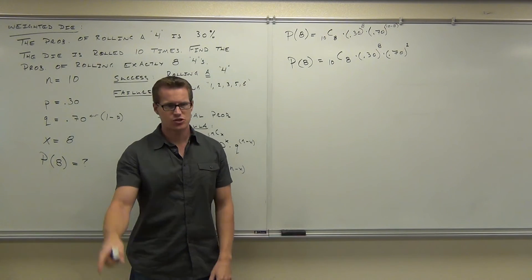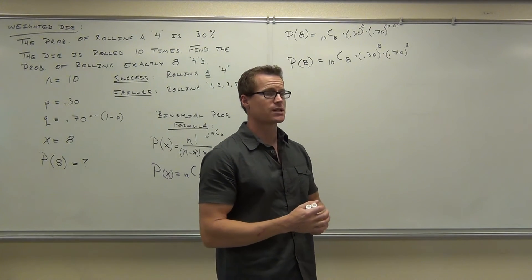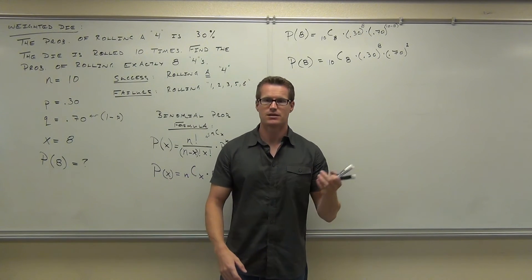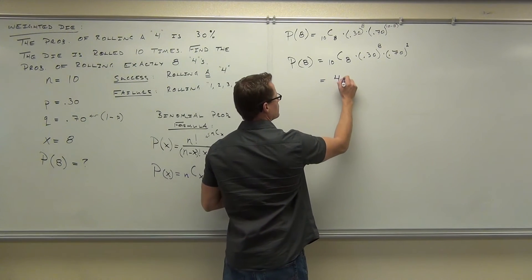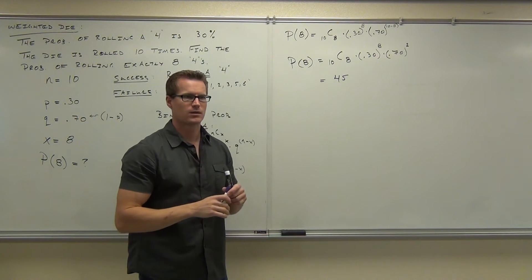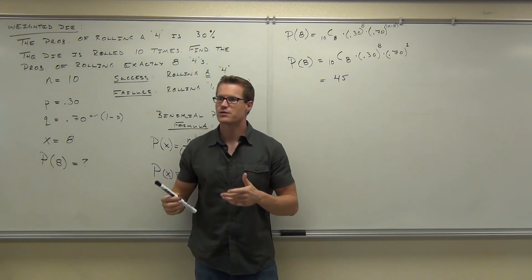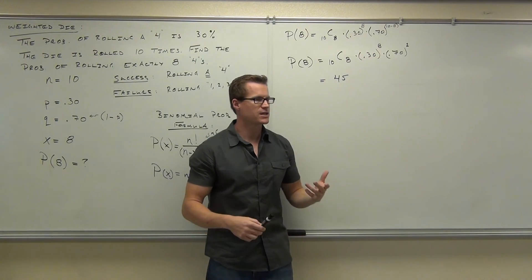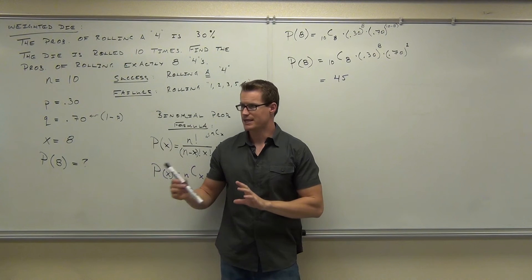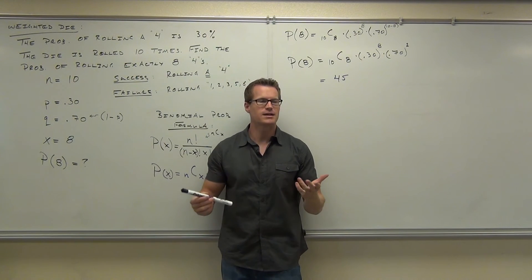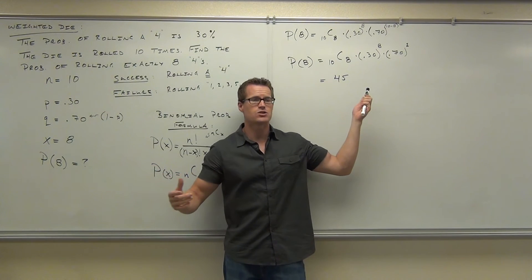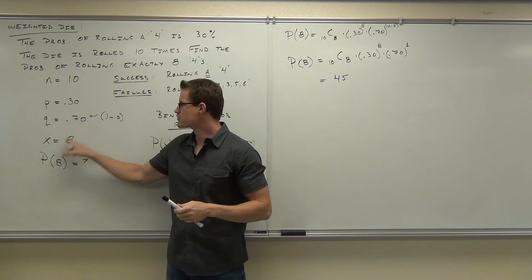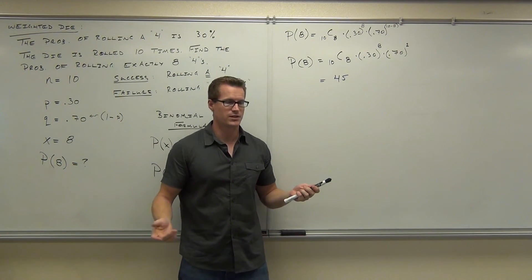Let's do it. Find 10C8 — you should know how to do that on your calculator. What is it? 45. So there are 45 ways, rolling a die ten times, to get exactly eight fours. By the way, notice that the number four — the specific value we're trying to roll — didn't appear in our equation at all. This formula is not based on the specific value you're trying to get. It's based on the number of successes, the probabilities, the number of trials, and the number of successes you're looking for. It doesn't even have to do with the four — it's all about the number of successes.